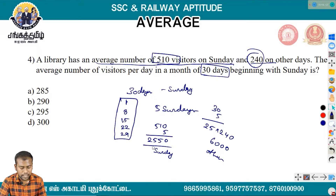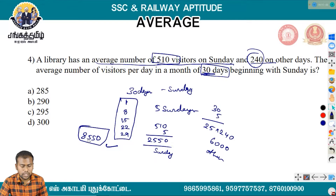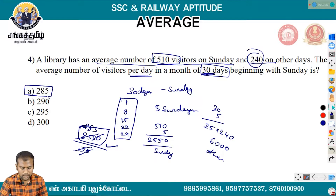If you add 2 each, in a month of 30 days there are multiple members. That total is divided by the number of days, giving an average of 285 visitors per day.